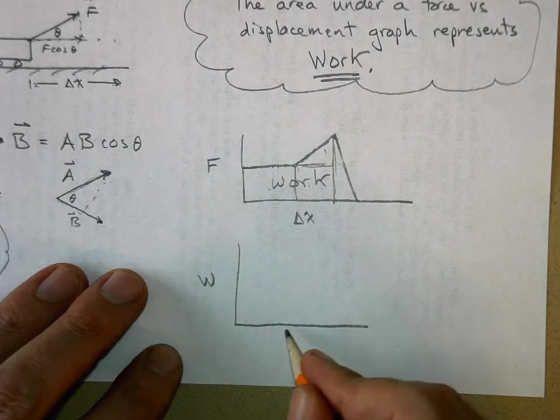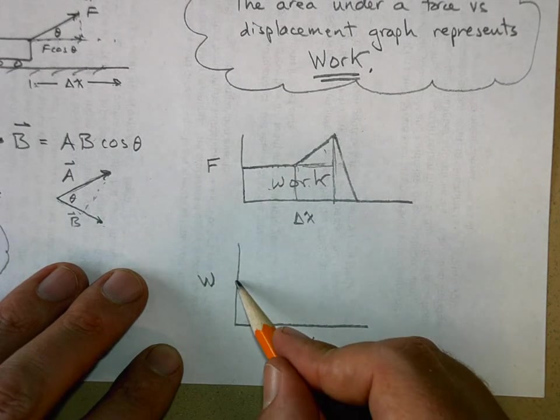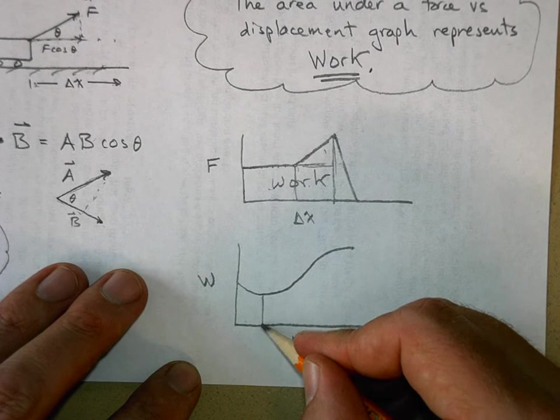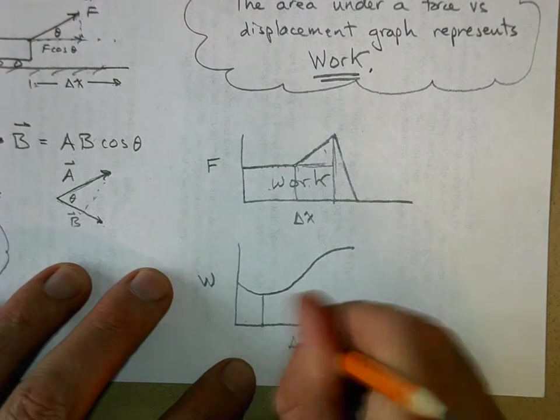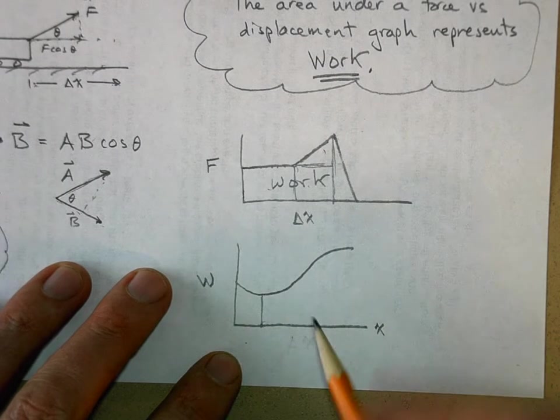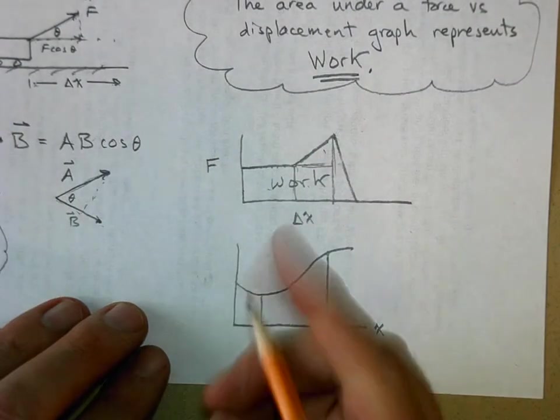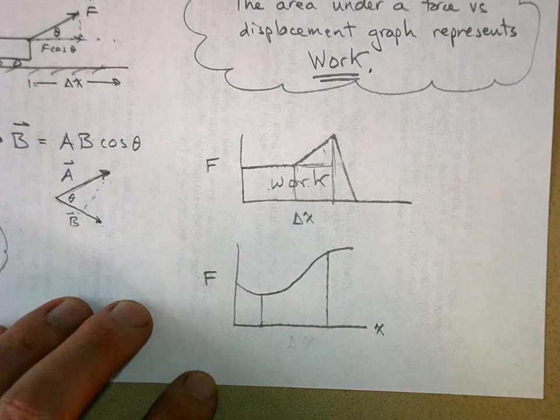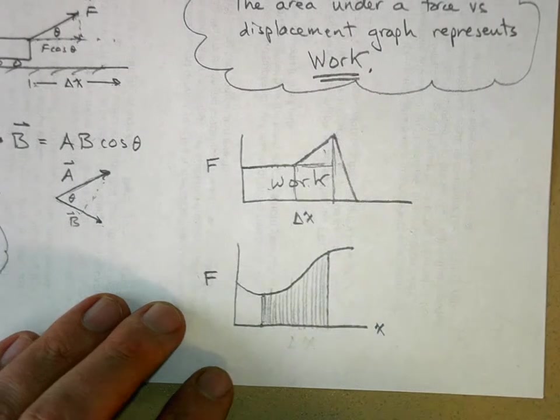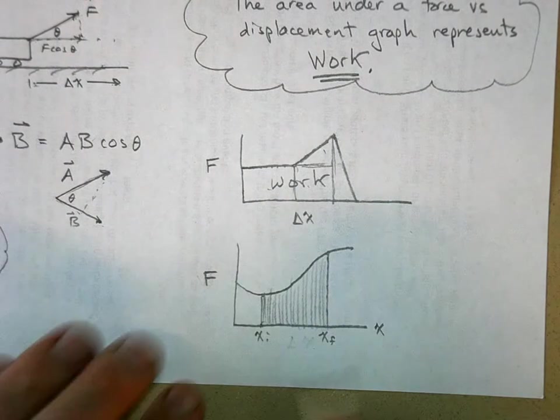Here we have work and we have delta x. You might have a shape that looks like this. Maybe you want to know how much work did we do between this position. Actually, maybe I'll just make this the position, but we're going to deal with the delta x. So this graph is wrong. This is force and this is position here. We're going to break these up into an infinite number of little rectangles. This is x initial, x final, and so the work done here.